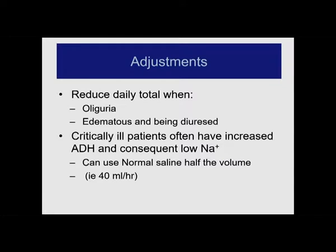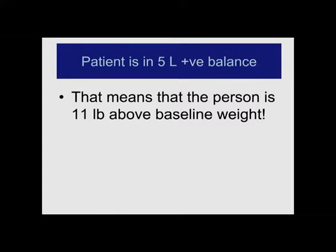You can make adjustments for oliguria or edematous patients. Critically ill patients usually have excess ADH, so the sodium tends to run a little bit lower, usually leveling off at the 132 to 134 range, which is still acceptable, though some people get nervous at those lower sodiums. If a person is five liters positive balance — I like it in pounds, it is more dramatic — that means they are 11 pounds heavier, about a 7 to 8% increase in body weight.